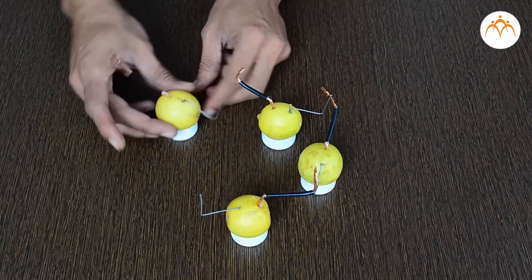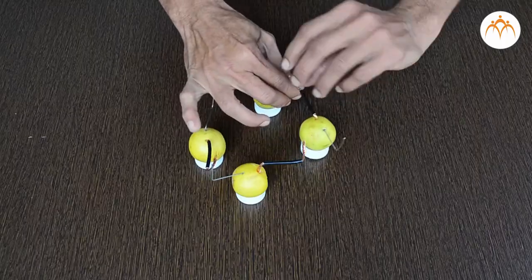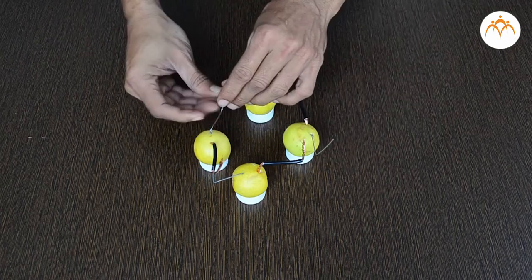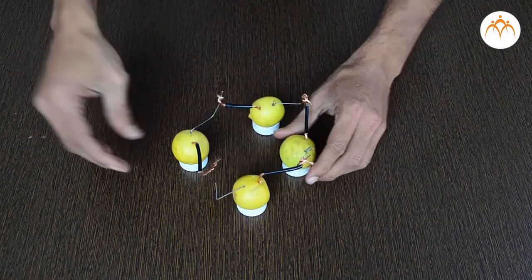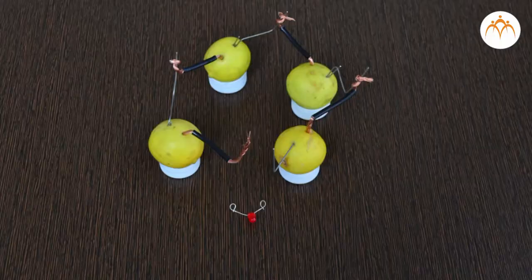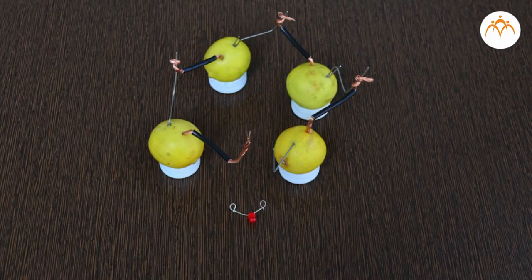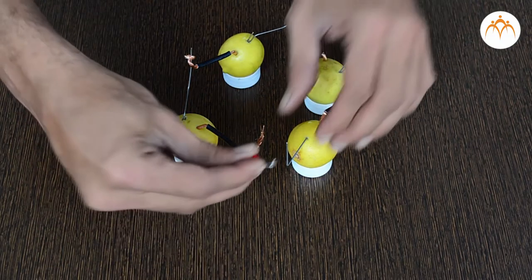So we will connect four lemons next to each other such that copper wire is connected to galvanized wire. As a result of chemical reaction, electrons flow through the completed path to form a circuit.